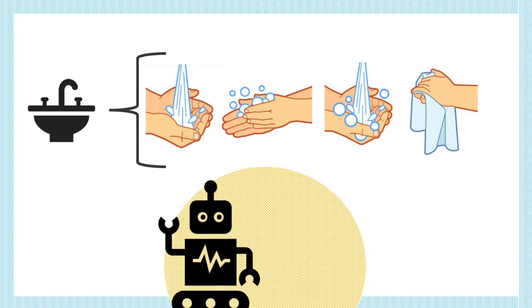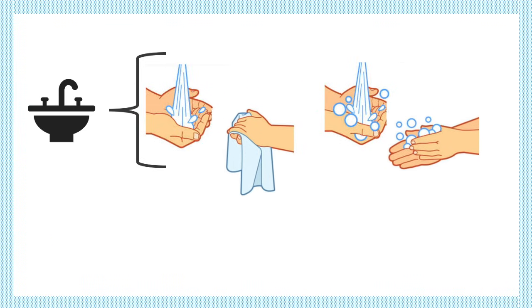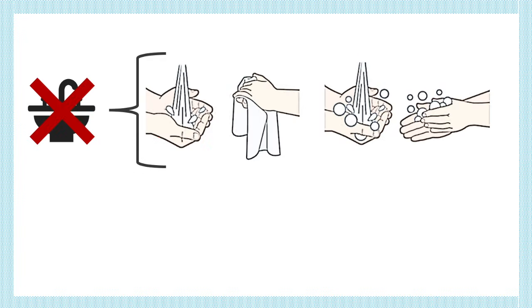So what do you think happens if the sequence is written incorrectly in a program's code? You guessed it. The program won't run correctly. This is called a bug.